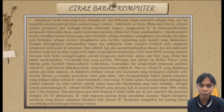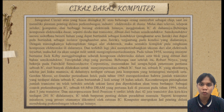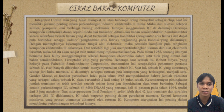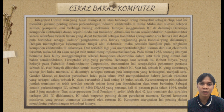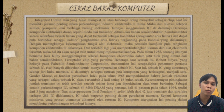Umumnya bahan semikonduktor yang digunakan dalam pembuatan IC adalah silikon, meskipun beberapa bahan lain pun juga memungkinkan untuk digunakan. Proses pembuatan IC sendiri terdiri dari ratusan langkah meskipun prosesnya cukup rumit. Namun keuntungan yang didapat dari fleksibilitas sebuah IC jauh lebih besar dibandingkan jika tidak menggunakan IC. Sejak penemuan IC, teknologi IC masih tergolong sangat muda, belum mencapai setengah abad dari pertama kali diproduksi.